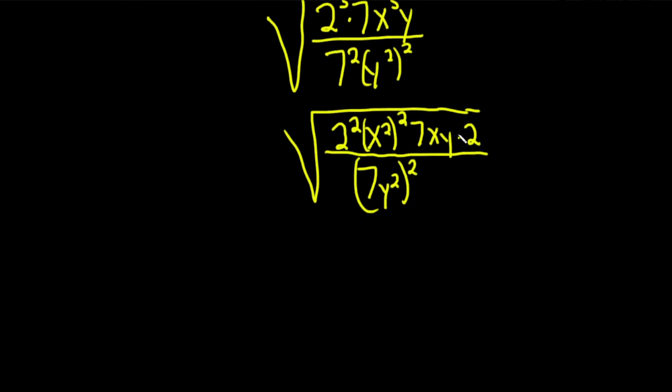So now we can just take the square root of each piece in the numerator. So taking the square root of this we're going to get 2. Taking the square root of this we're going to get x squared.